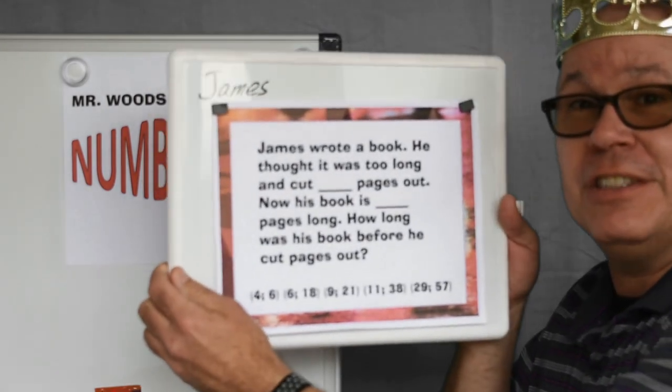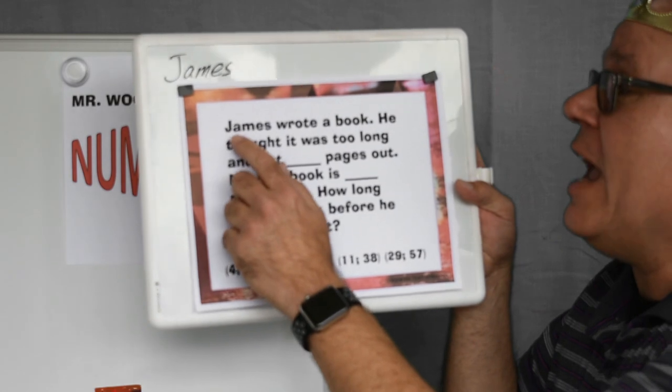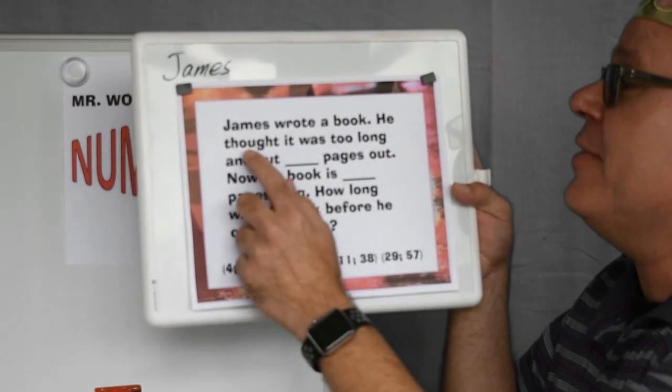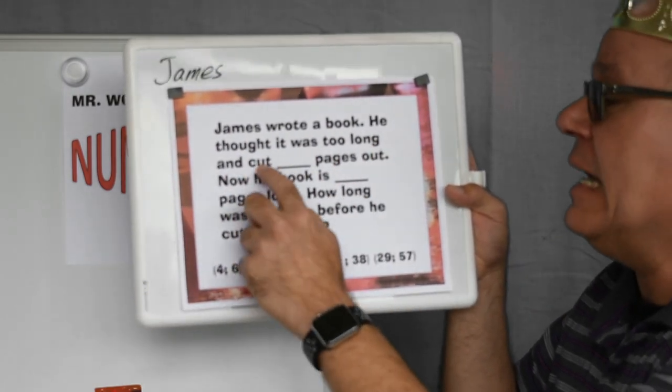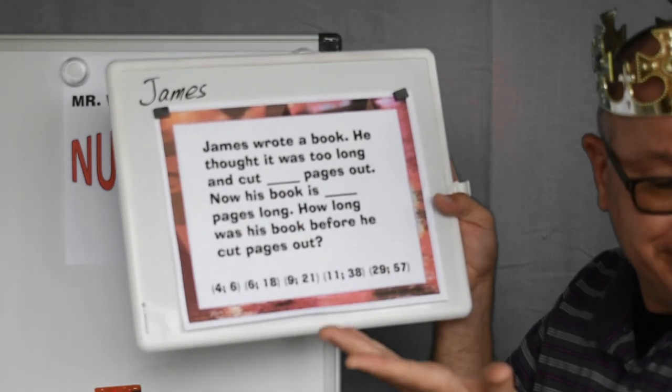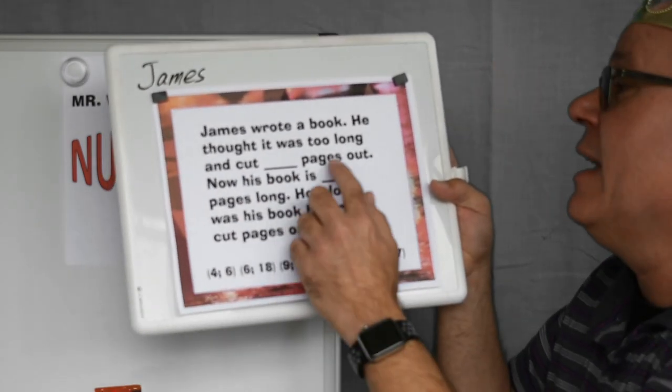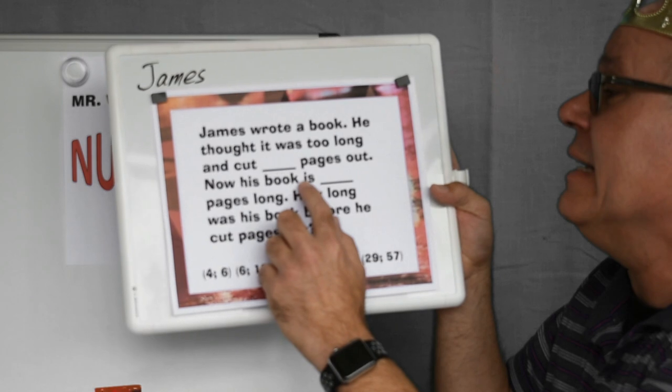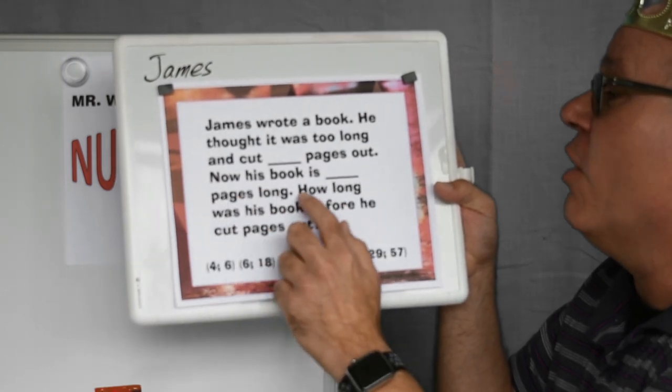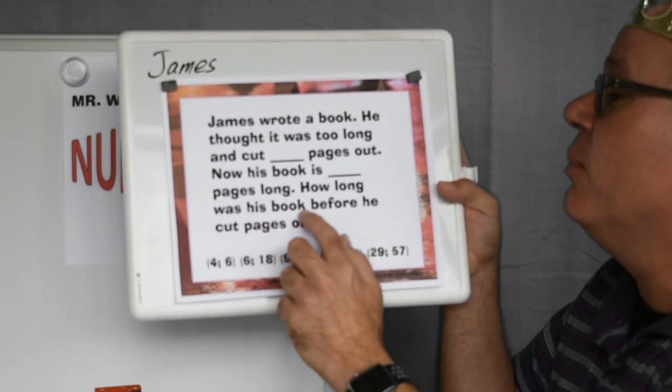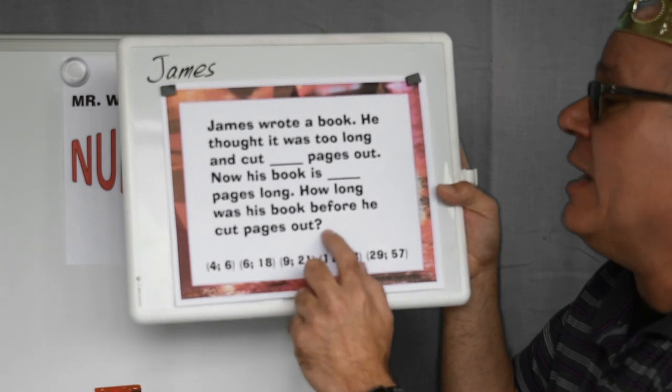Okay, today we're going to talk about James. So James wrote a book. He thought it was too long and cut three pages out. Now his book is eight pages long. How long was his book before he cut pages out?